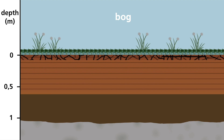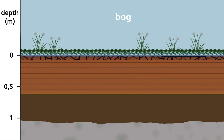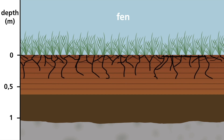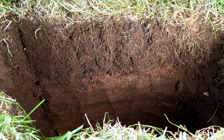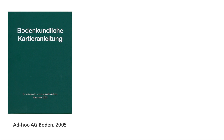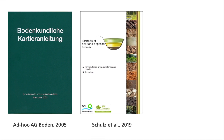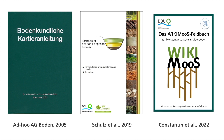For peatland re-wetting, the peat type and the degree of humification in the subsoil or soil base are especially important. When re-wetting a bog, it is advantageous to have a strongly decomposed peat layer deep in the soil — for example, black peat. Thanks to its low hydraulic conductivity, it will act as a seepage barrier, retaining rainwater in the peat above. When re-wetting fens, such impermeable layers are a problem, as groundwater cannot easily flow upwards through them, meaning too little water reaches the peat layers near the surface. For recording the characteristics of peat soils, different resources exist in Germany: the standard is set by the German Soil Mapping Guidelines; additionally, for identifying peat type or other peatland deposits, there are the portraits of peatland deposits; and for identifying structural characteristics and horizons, there is the new Wikimose Field Guide.